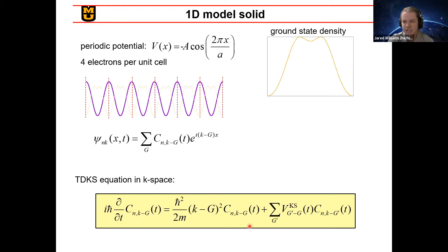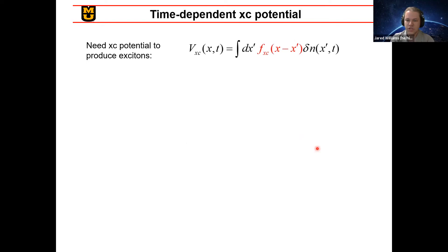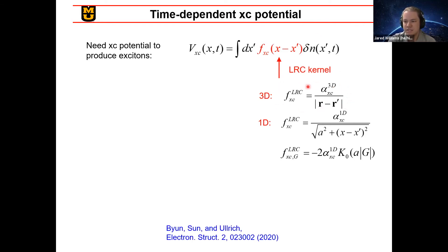So now, in order to put this into practice, we need some kind of system to do our test calculations in. So we have a 1D model solid where we take a very simple periodic cosine potential and splitting that into unit cells, we take four electrons per unit cell. And from this, we can calculate the ground state density that has this shape per unit cell, which gives us this band structure. And we still need an exchange correlation potential in order to actually produce the excitons, and that comes in the form of this exchange correlation kernel, for which here we choose the long-range corrected kernel.